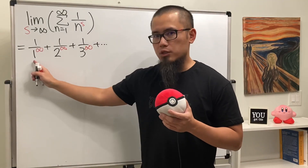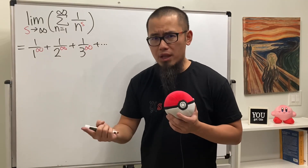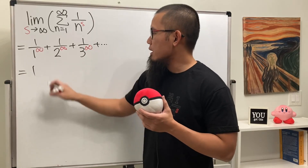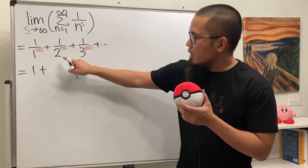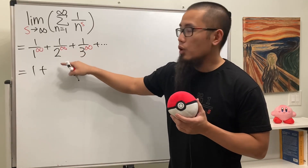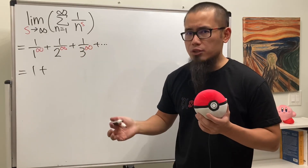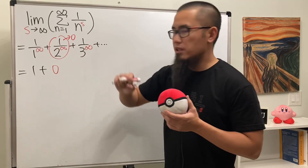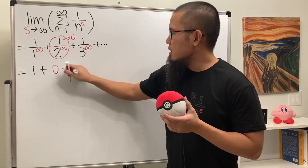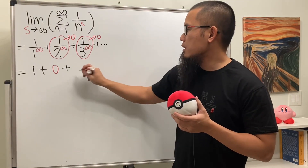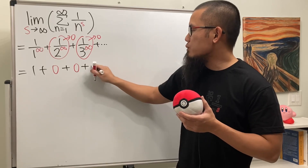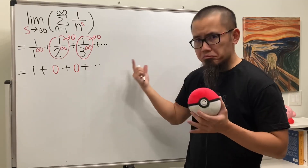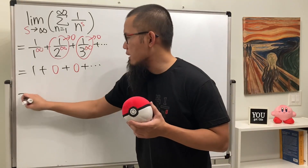Now take a look at the first one. We have 1 to the infinity's power — that's just 1. 1 over 1 is still 1. Then we add it with 2 to the infinity on the bottom. That's infinity. 1 over infinity will actually approach 0, so this term goes to 0. And similarly, this term also goes to 0, and in fact all the remaining terms will just be 0s. So 1 plus 0 plus 0 and so on is just equal to 1.